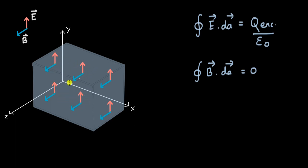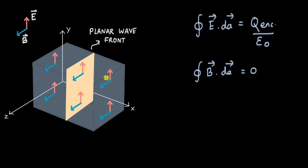The electric field is the same on the top and bottom sides of the Gaussian surface. The number of electric field lines coming out of the box equals the number going in, so the total electric flux is zero. Similarly, the magnetic field lines coming out of the left side equal those entering from the right side, so the total magnetic flux through the box is also zero — even if part of the box is in the region where E and B are zero. So the integral of E·dA equals zero.